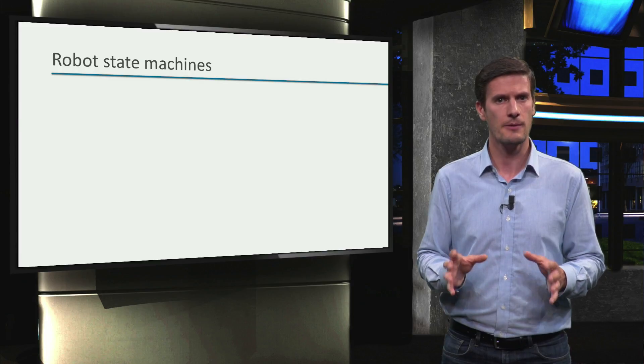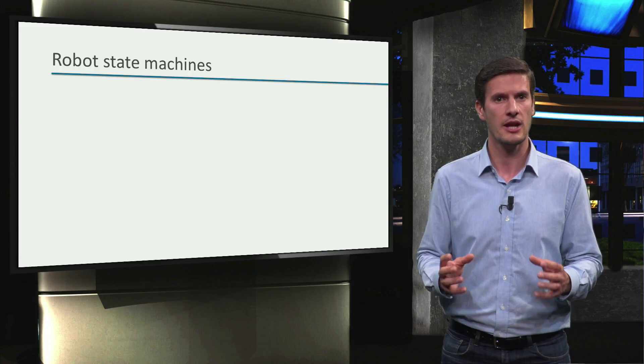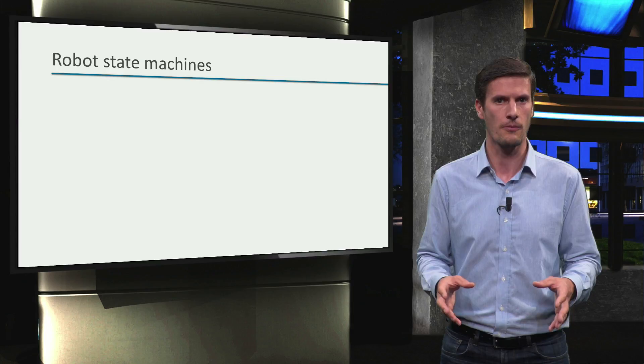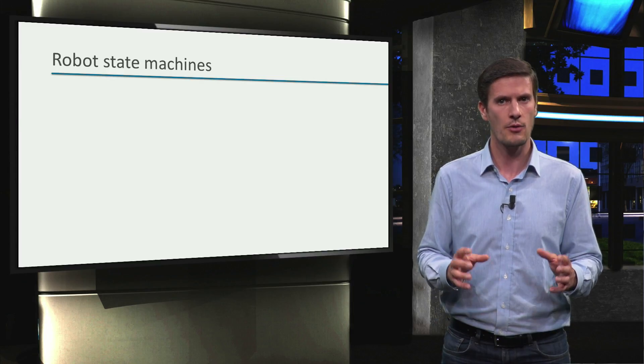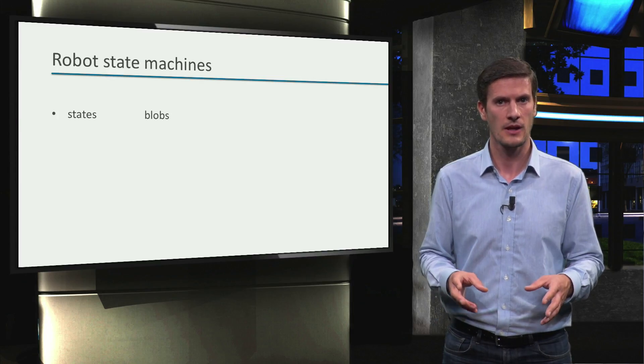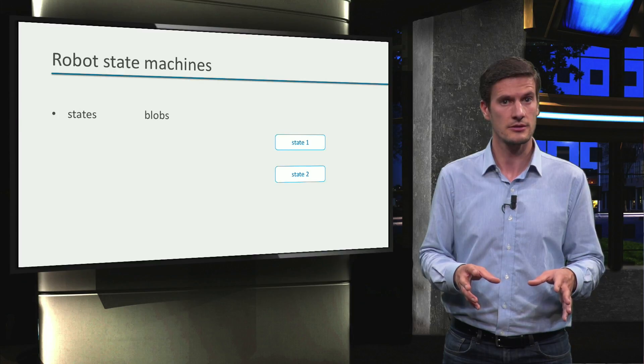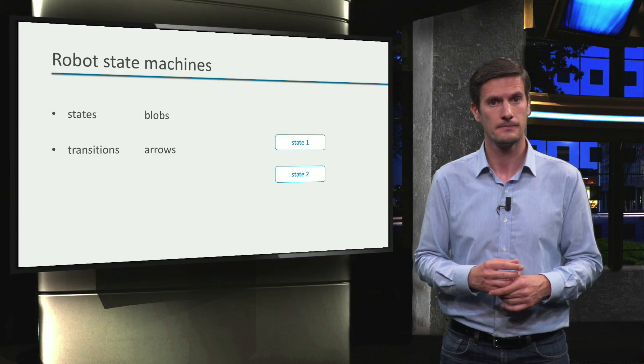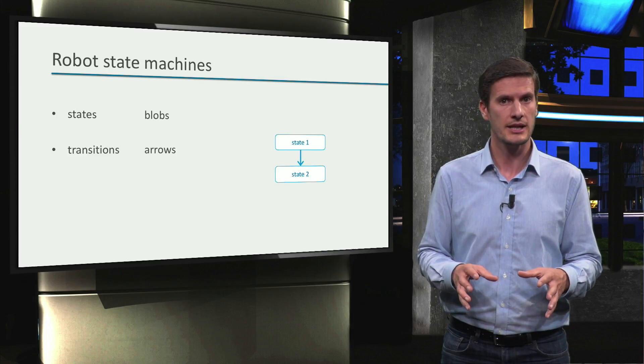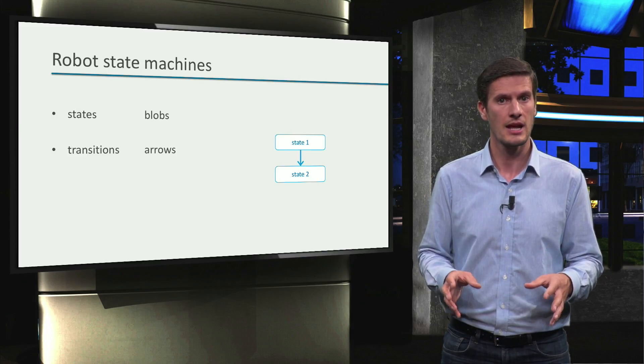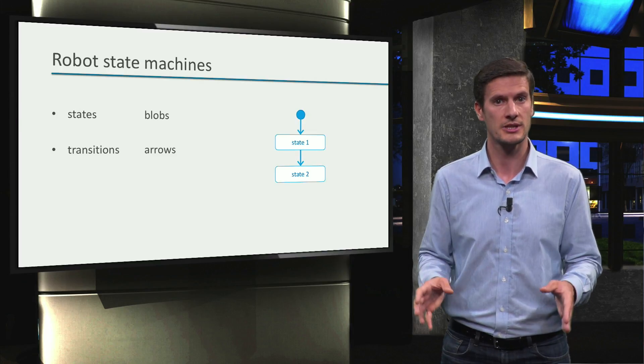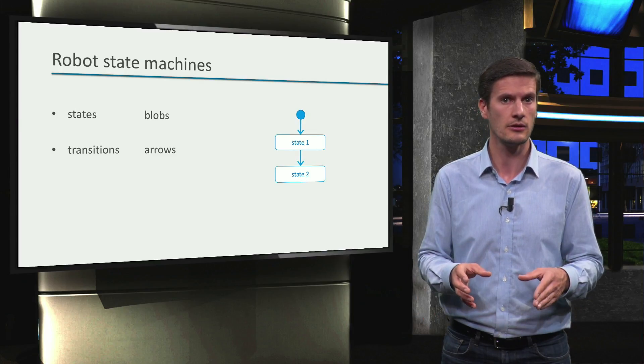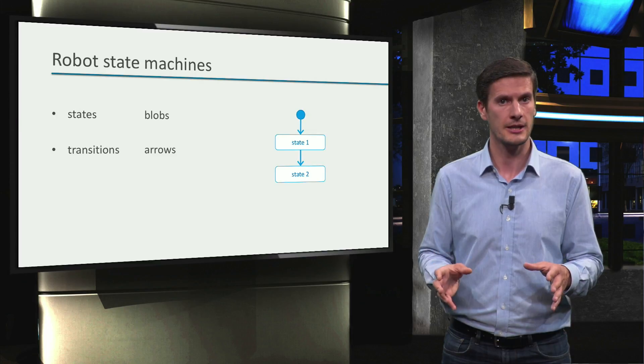State machines are very popular because they represent the behavior in a visual and intuitive form. States are represented as blobs and the transitions by arrows that connect the state blobs. To indicate the first state of a behavior, a transition is drawn from the entry point, which is represented as a filled circle, to the first state.